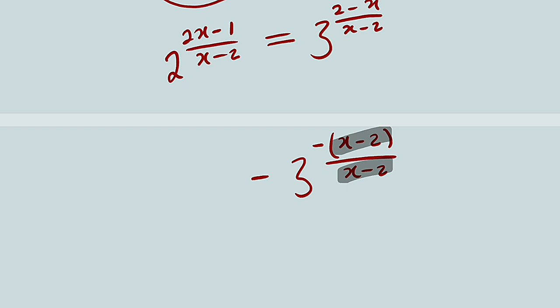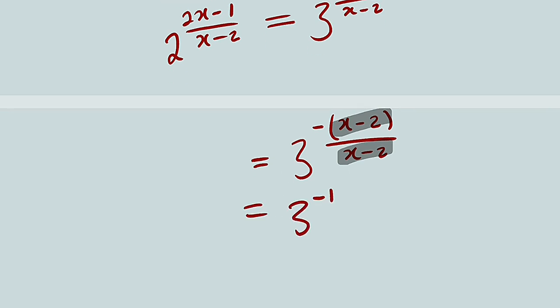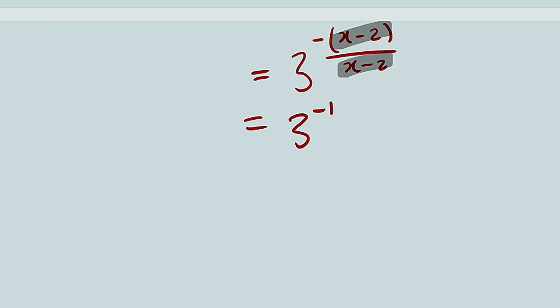Therefore our final answer will be equal to 3 to the power of negative 1, which is the same thing as 1 over 3. This is 1 over 3. So the whole expression that we are looking for, 2 to the power of (2x-1) divided by (x-2), is nothing but 1 divided by 3.